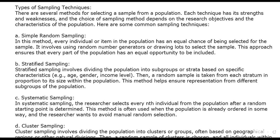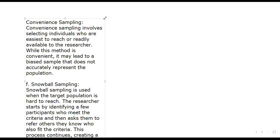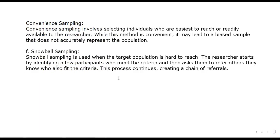Then we move to non-probability sampling methods. We have convenience sampling, snowball sampling, and judgment sampling. These are the types of sampling methods used when dealing with non-probability sampling.